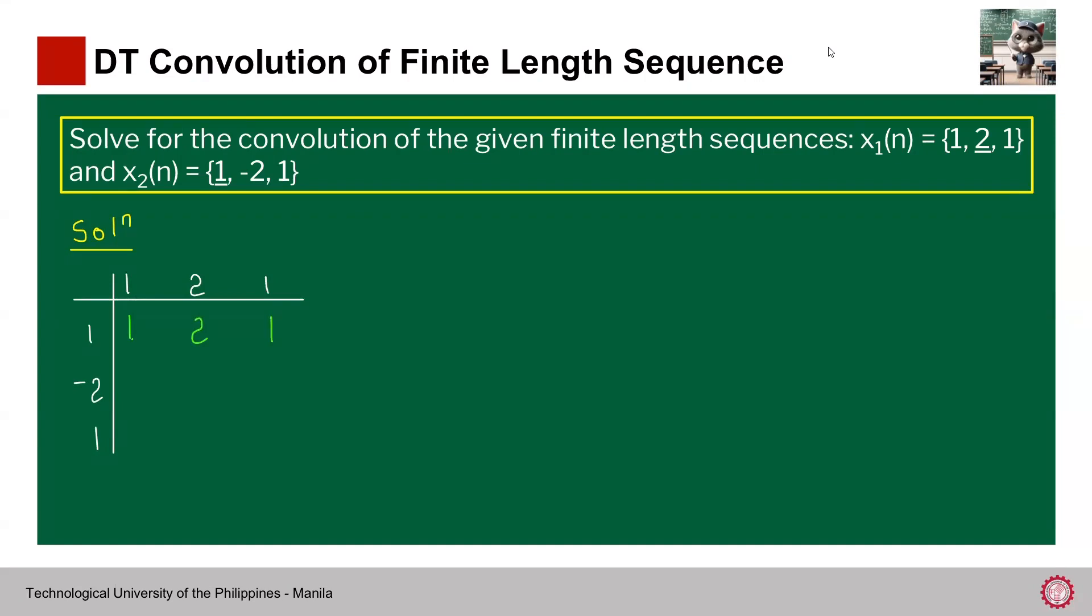For the next row, negative 2 times 1, we have negative 2. Negative 2 times 2, we have minus 4. Negative 2 times 1, we have negative 2. Now for the third row, similarly, multiplying, we have 1, 2, and 1.